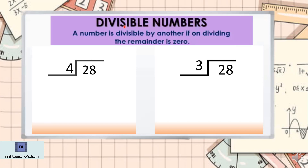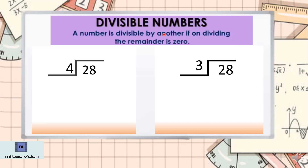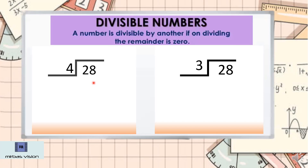Divisible number: a number is divisible by another if on dividing, the remainder is 0. If the remainder is 0, the number is divisible by the number dividing. So here we can see two examples. First, let's do this example. Here we can see 28 divided by 4. In the 4 times table, let's check the product — where is 28 coming?